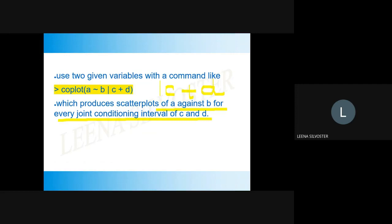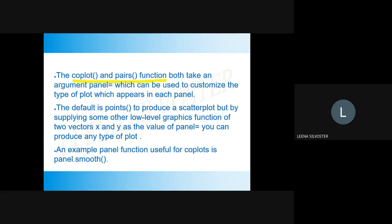Both coplot() and pairs() functions take a panel argument, which can be used to customize the plot. The default is points(), to produce a scatter plot. But by supplying another low-level graphics function of two vectors using panel=, you can change the appearance. An example of a panel function is panel.smooth(). So in coplot() and pairs(), we use the argument panel= to customize the plot, and the default version is points(). An example for a panel function is panel.smooth().